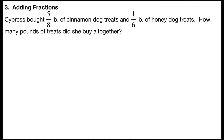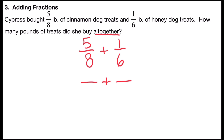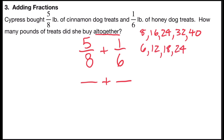Problem number three is adding fractions. It says Cypress bought five-eighths pounds of cinnamon dog treats and one-sixth pound of honey dog treats. How many pounds of treats did she buy altogether? All together indicates addition, so I'm going to add five-eighths plus one-sixth. I need to find a common denominator, so I'll list multiples of eight — 8, 16, 24, 32, 40 — and multiples of six — 6, 12, 18, 24. Twenty-four is the first multiple that's the same in both lists, so that will become my common denominator.